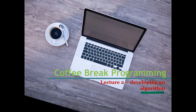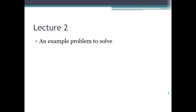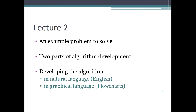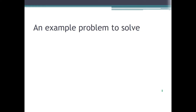We remember what an algorithm was from the last lecture — it was just a list of instructions. We will develop an algorithm, and for that we will of course need a problem to solve. The topics for today are: first, introducing an example problem; then, the two parts involved in developing any algorithm; and afterwards, we will write the algorithm in two forms — in natural language, using English, and in the graphical language called flowcharts.